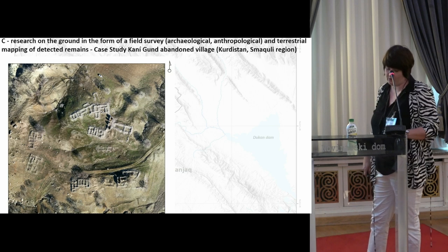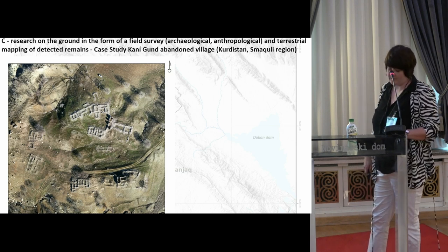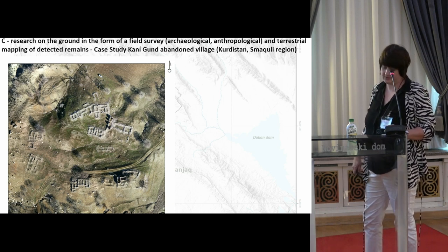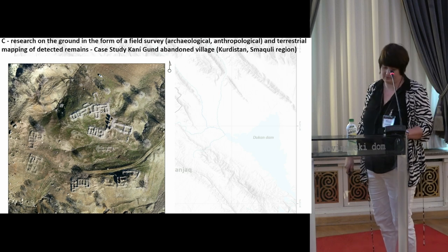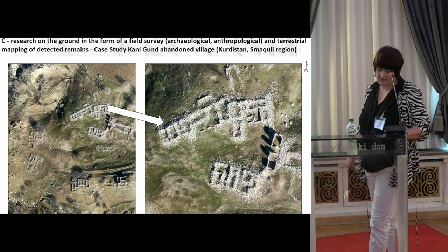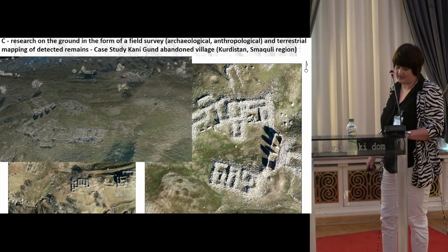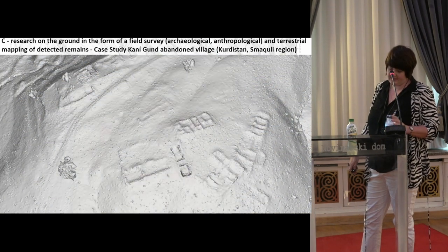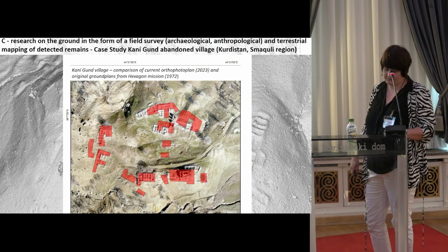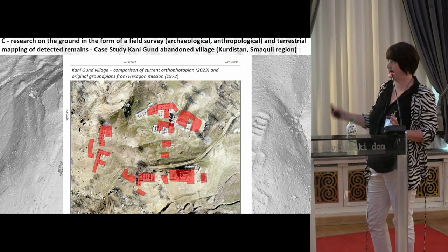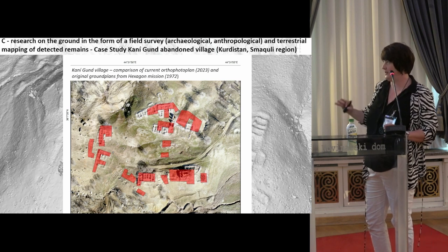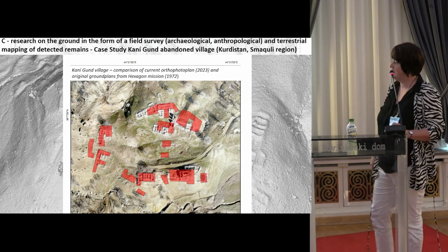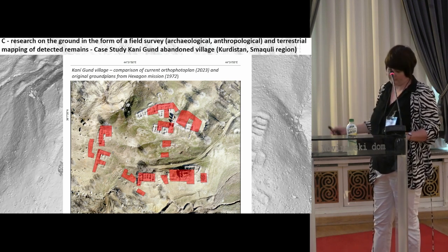Field research is carried out in the form of field survey and terrestrial mapping of discovered remains. The research is fully non-destructive and uses common digital equipment like UAV, terrestrial photogrammetry, and terrestrial laser scanning. The results will be processed to produce 3D models and orthophotoplans which can be used for in-situ documentation of the current state of the villages, because these remains are in a very precarious situation - they disappear quickly due to weather conditions, or even locals taking building materials for new houses.